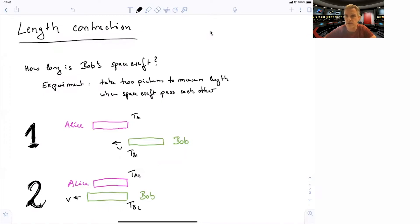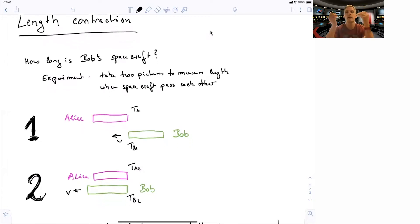The experiment is conducted by taking two pictures. It's illustrated here. The first picture is when Alice's and Bob's spacecraft just start to meet. Bob's relative to Alice's is moving with velocity v. And we take the second picture when the back of Bob's spacecraft is meeting the front of Alice's, just like it's shown here. And the pictures take pictures of clocks.